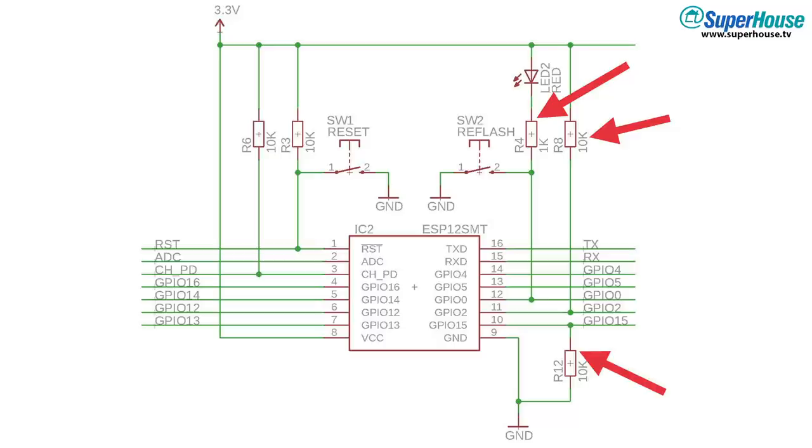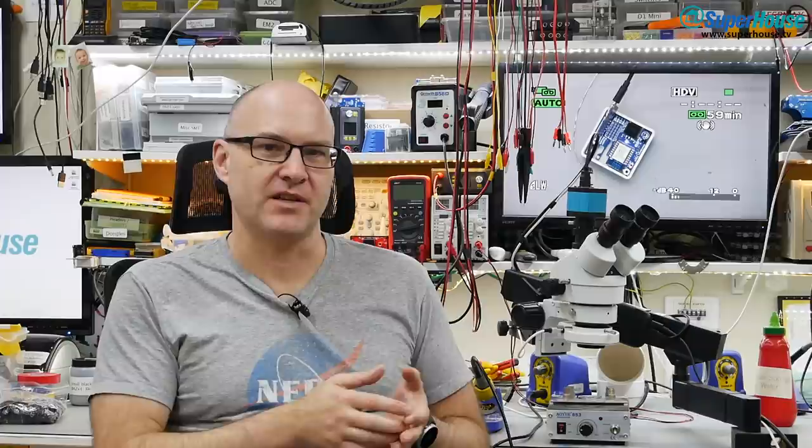We need to be able to assert GPIO0 and hold it asserted while resetting the processor. So what we need is a programming header that is going to expose ground, power, TX, RX, GPIO0, and reset.